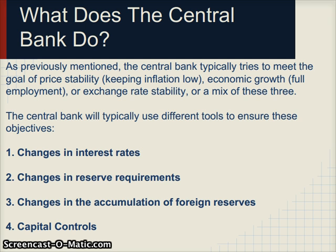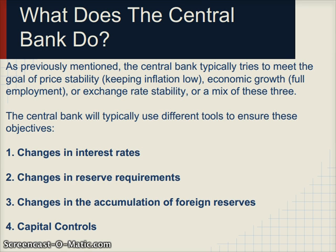A central bank typically tries to meet a goal or several goals such as price stability — keeping inflation within a range, let's say 2 to 4%. At the same time they may focus on economic growth, say 2% per year, or full employment, say keeping unemployment below 6%, or even exchange rate stability where they want a currency to trade at a particular level versus another, or it could be a combination of all of these goals.